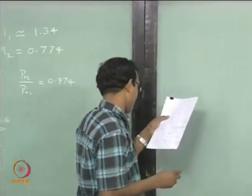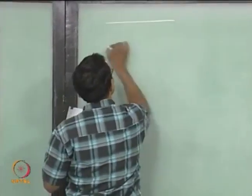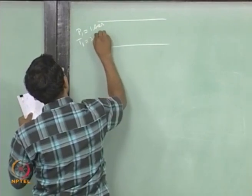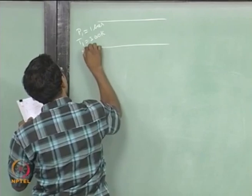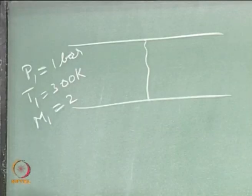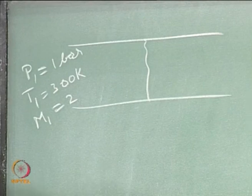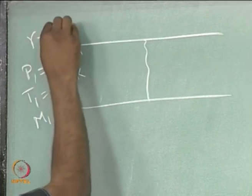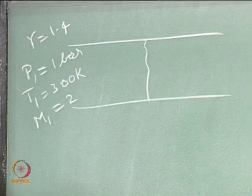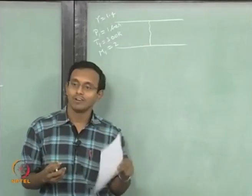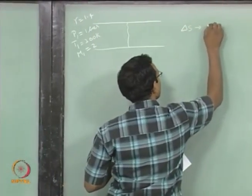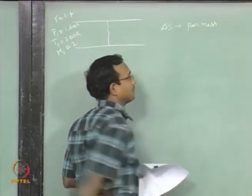We will look at the next problem where something different is given. I am given P1 equals 1 bar, T1 equals 300 Kelvin, M1 equals 2, and there is a normal shock sitting inside my duct. This is air with gamma equal to 1.4. I want you to find the entropy change per unit mass for the air passing through this shock — that is what I want to find.